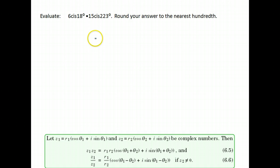Let's go ahead and do one more of these. We're multiplying again, and again they gave us just the abbreviation for our complex number. So remember, this would be 6 times cosine of the angle 18 plus i sine of the angle 18 degrees. We're multiplying that by 15 cosine 223 degrees.